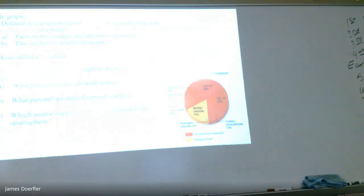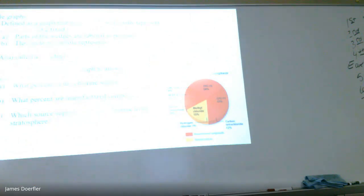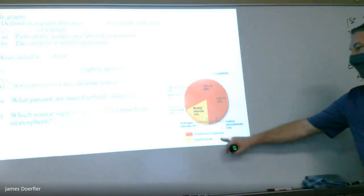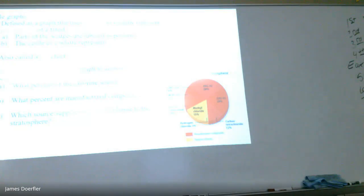Circle graphs use wedges to visually represent percentages of a fixed whole — think of it like a pizza, where each slice represents a percentage. It's also called a pie chart. We use circle graphs to answer questions like: what percent of chlorine sources are natural? When you have graphs, you need either symbols or colors to differentiate between data. In pie charts, we use colors.